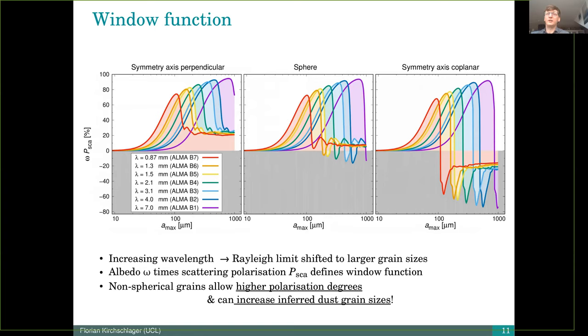And when we then finally go to our window function, which is defined as albedo squared times the scattering polarization, which really defines our self-scattering scenario, we see for the spherical grains at the center that we have a clear peak at certain wavelengths. And this peak gives us then the maximum grain size which can then be derived.